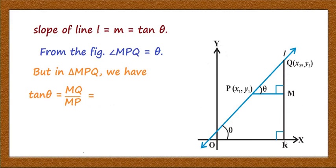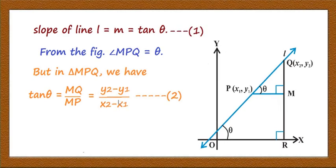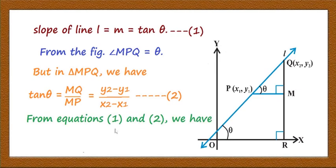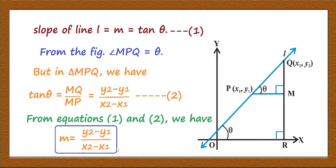MQ = y2 - y1, because this height is y2 and this distance is y1. MP = x2 - x1, because the coordinate of Q is x2. Therefore, tan theta = (y2 - y1) / (x2 - x1). This is equation 2. From equations 1 and 2, the slope of the line m = (y2 - y1) / (x2 - x1).